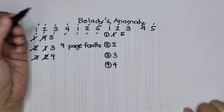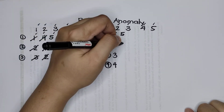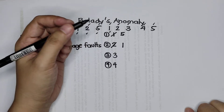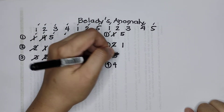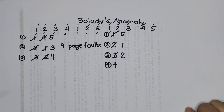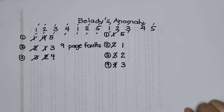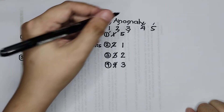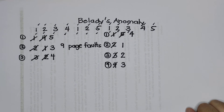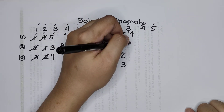Next we have one. Since one is recently removed, the oldest frame is in frame number two, so replace two with one. Next we have two — replace the next, which is frame number three, and replace it with two. Next we have three — the oldest frame is frame number four, so replace four with three. Then we have four — it's not in any of the page frames, so replace five with four. Five is recently removed so it's not in any of the page frames — the oldest frame is in frame number two, so replace one with five.